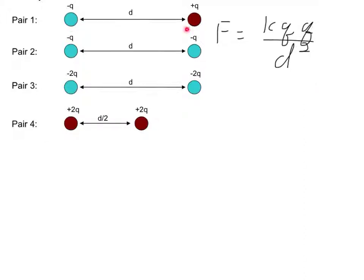The first two pairs both have charge of Q on both sides. So the numerator would be the same for both of those, Q times Q. They're also the same distance apart, so the denominator would also be the same. So pair 1 and pair 2 have the same force in between them.